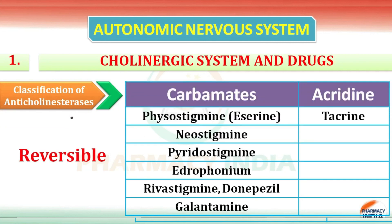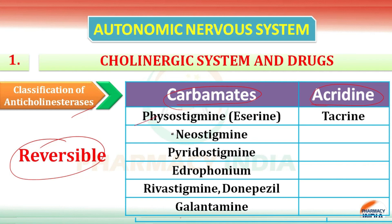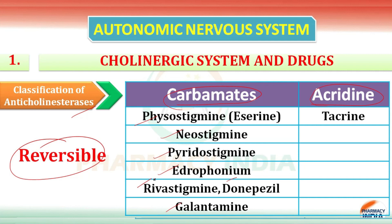Next we discuss the classification of anticholinesterases, divided into reversible and irreversible. Reversible is further divided into carbamates and acridinium. In carbamates: physostigmine, neostigmine, pyridostigmine, edrophonium, rivastigmine, donepezil, and galantamine — donepezil and rivastigmine are drugs for Alzheimer's disease. In the acridinium class there is tacrine.